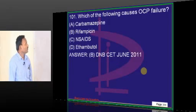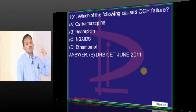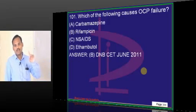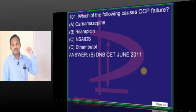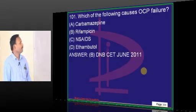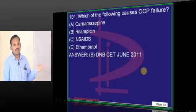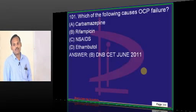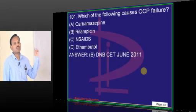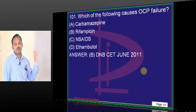Which of the following causes OC pill failure? You have to choose the drug with the highest capability of stimulating hepatic drug metabolizing enzymes. Carbamazepine can increase drug metabolizing enzymes to some extent, but it will definitely be far less than what rifampicin can do. Rifampicin is the most potent hepatic microsomal enzyme inducer out of the options given.